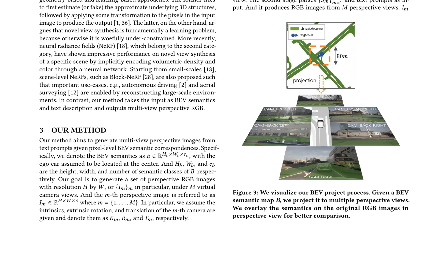In contrast to geometry-based and learning-based approaches such as neural radiance fields, NeRF, MVPBEV takes BEV semantics and text descriptions as input and outputs multi-view perspective RGB images. The method generates multi-view perspective images from text prompts given pixel-level BEV semantic correspondences. BEV semantics, denoted as B, are input with height HB, width WB, and number of semantic classes CB. The goal is to generate a set of perspective RGB images with resolution H by W under M virtual camera views.